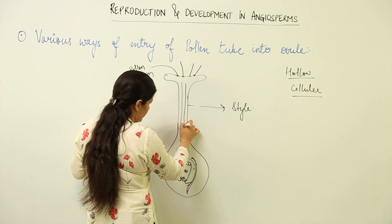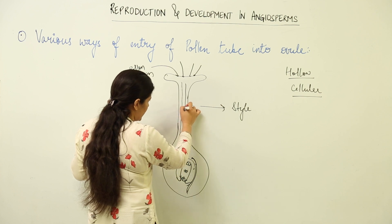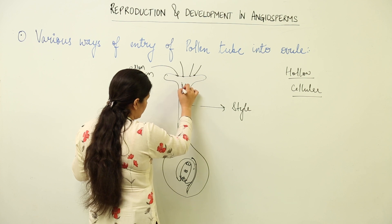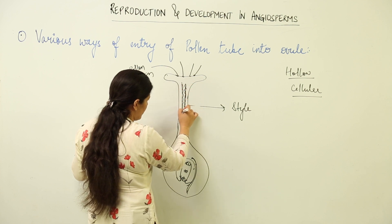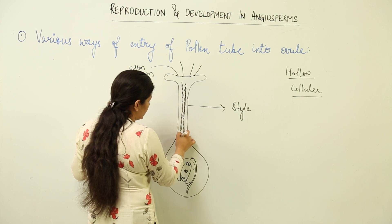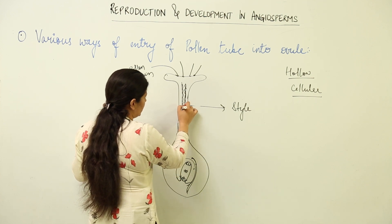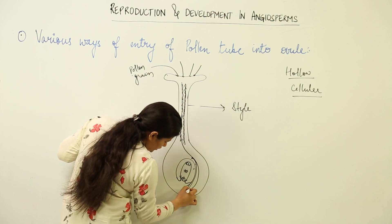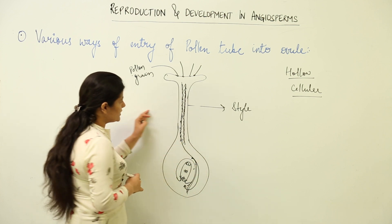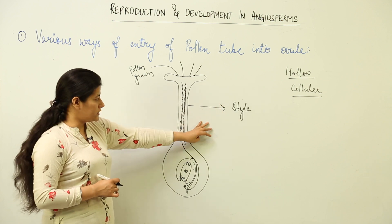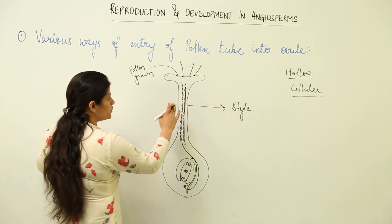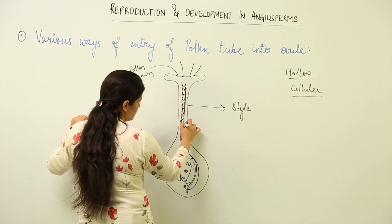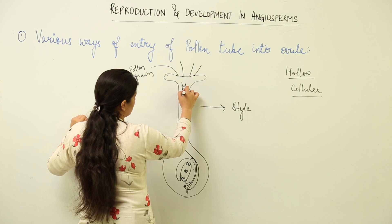If the style is hollow, that means there is a canal-like system surrounded by intermediate cells which provide the nourishment for the development of pollen tube further and further under the influence of chemicals, so that the pollen tube reaches the ovary. That is in the case of hollow style.